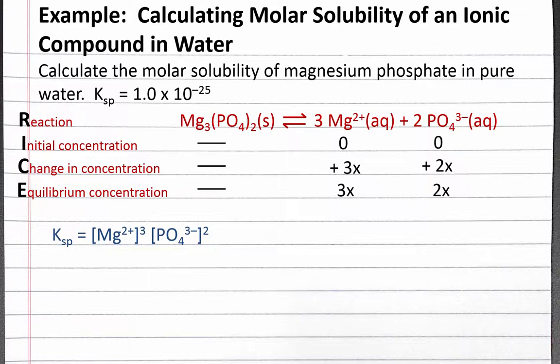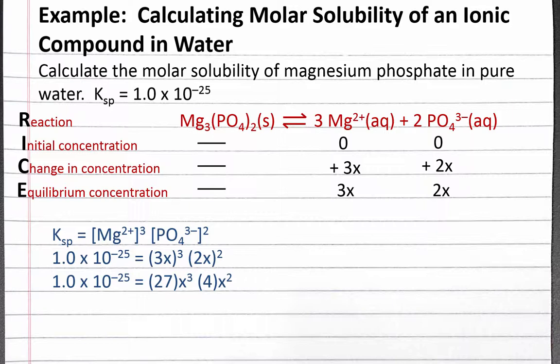We can substitute the Ksp value given in the problem, 1.0 times 10 to the negative 25, as well as the equilibrium concentration row of our RICE table into the Ksp expression. We have to be careful that we raise both the 3 and the x to the third power, and both the 2 and the x to the second power. Doing this, we'll get 27x cubed times 4x squared. This simplifies to 108 times x raised to the fifth power.